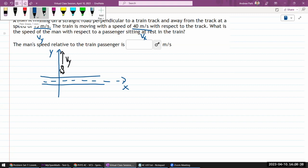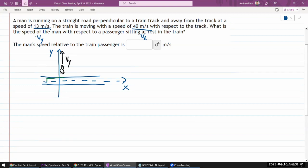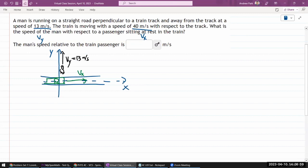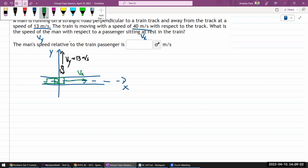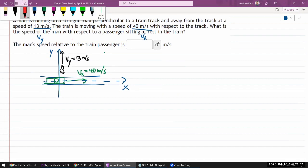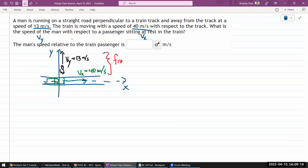So let me draw the train. So if this is the train and there's a passenger here, the train is moving with the speed v_x with respect to the track. So one might say, okay, v_y is equal to 13 meters per second and v_x is equal to 40 meters per second. And these are the speeds in the unprimed coordinate frame S, which we'll call that's the reference frame of track.